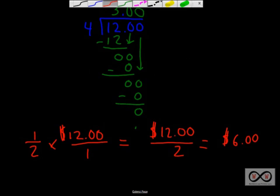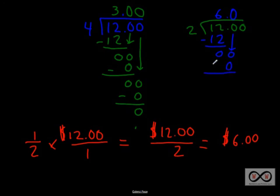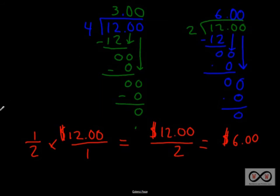To show our work, we set up 12 divided by 2. Two goes into 12 six times because six times two equals twelve. Subtract, get zero. Bring down the zero — two goes into zero, zero times. Bring down the other zero — zero times two is zero, subtract, no remainder. So six dollars is confirmed as the price for that half of the pizza.